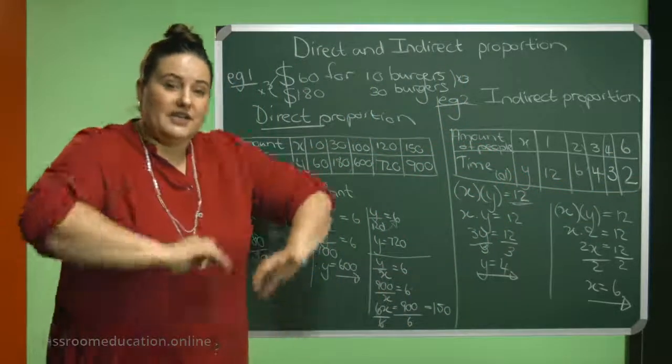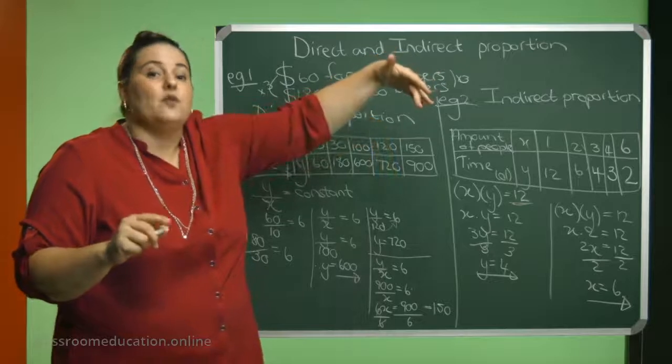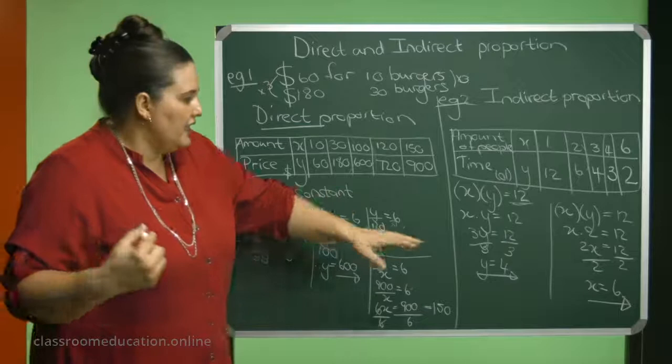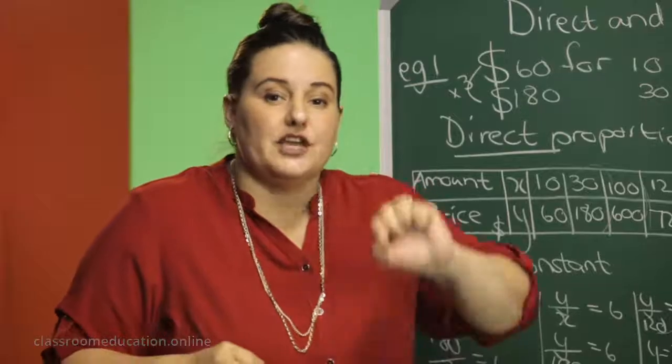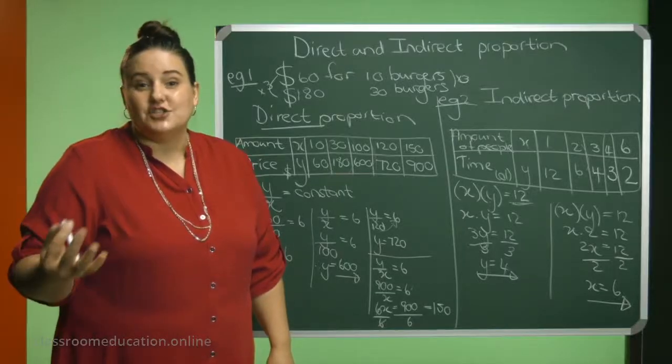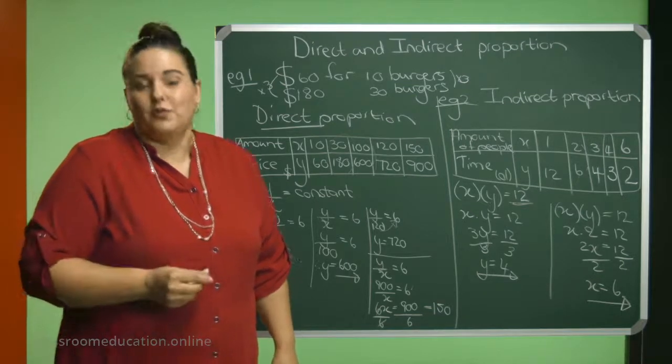So boys and girls, indirect proportion. If one value goes up, the other one will come down. How do I determine the values? If you multiply your X and the Y together, they need to give you the same value each time. I hope that it makes sense to you now, and that you understand direct and indirect proportion.